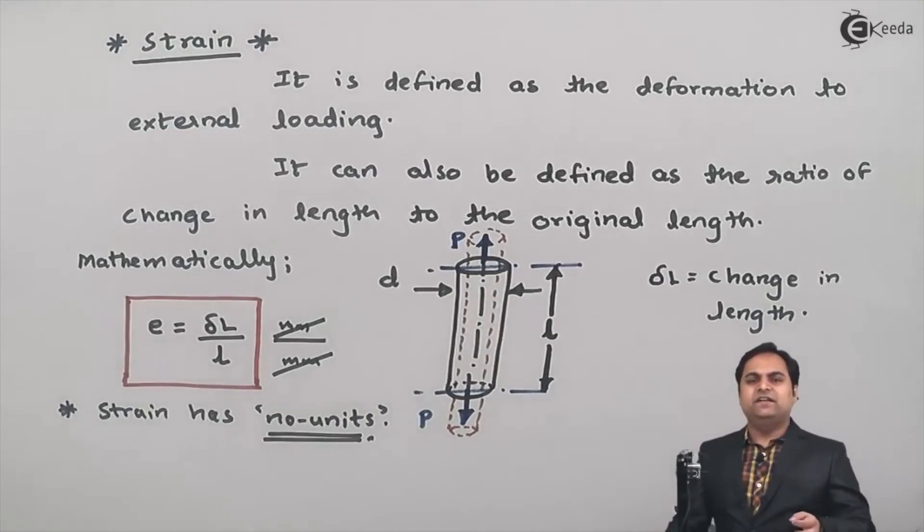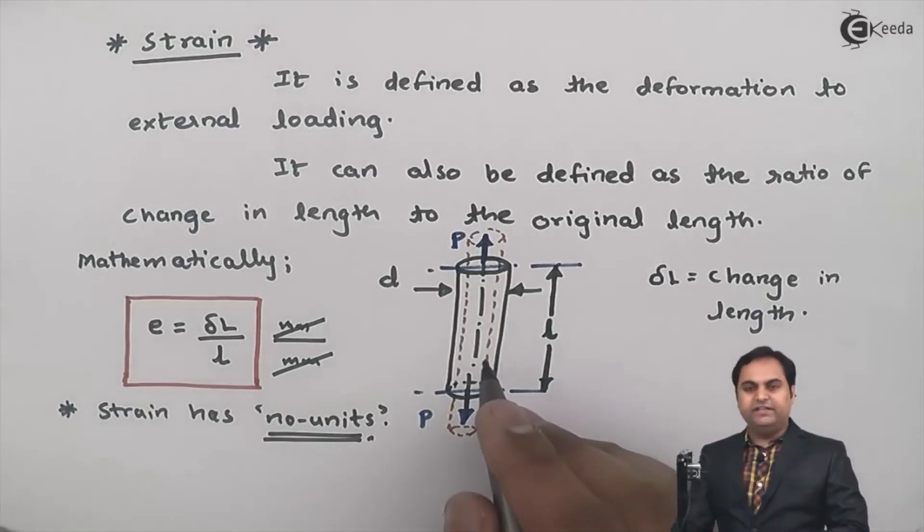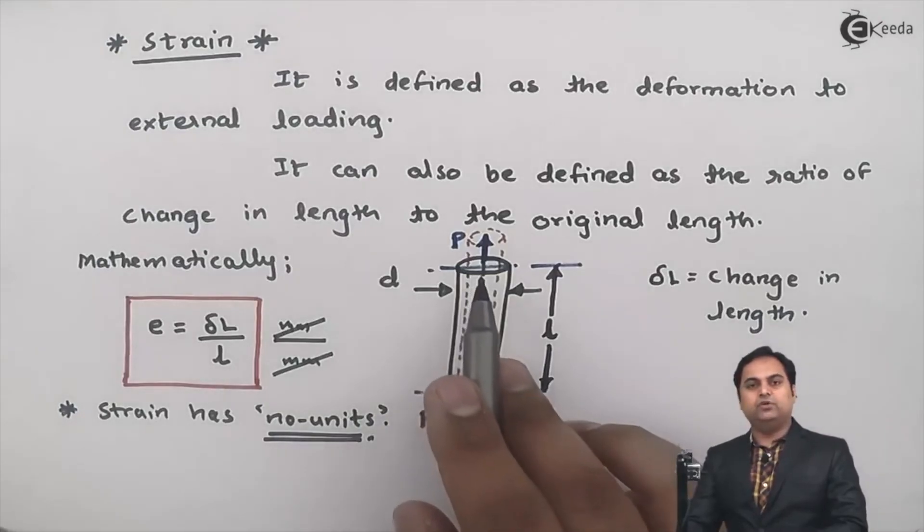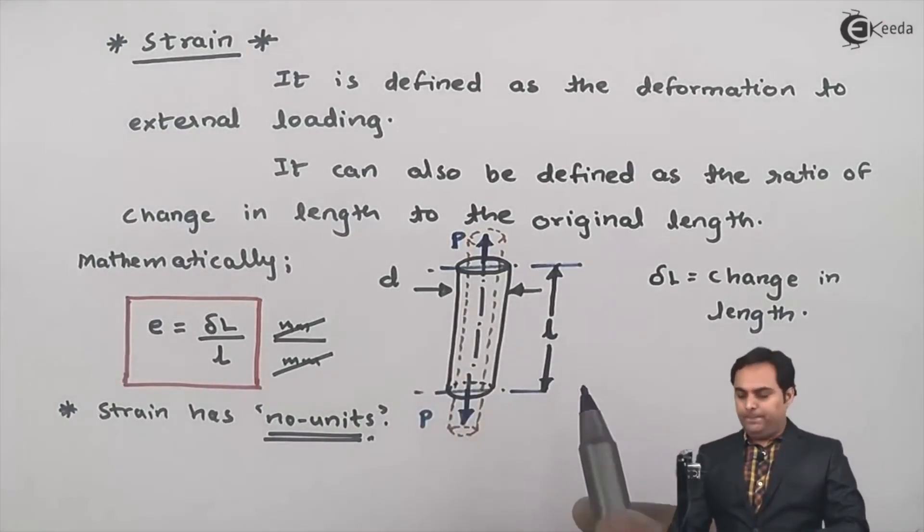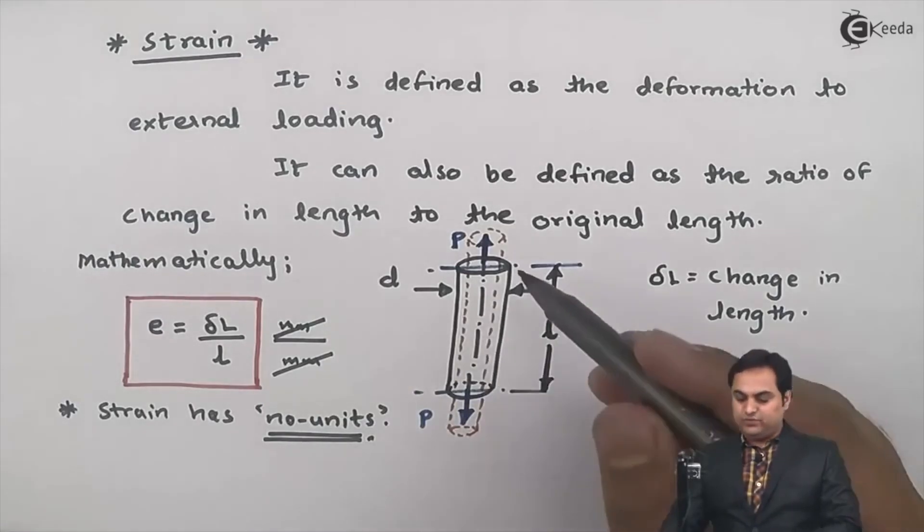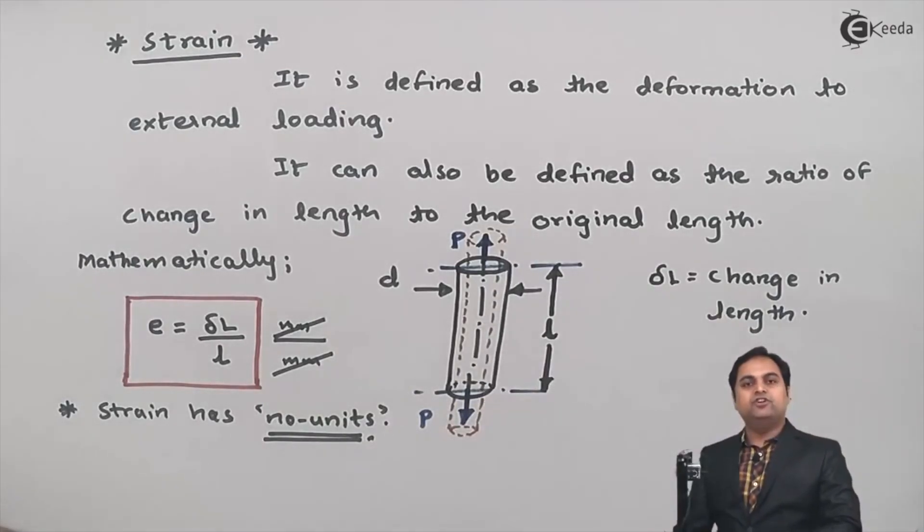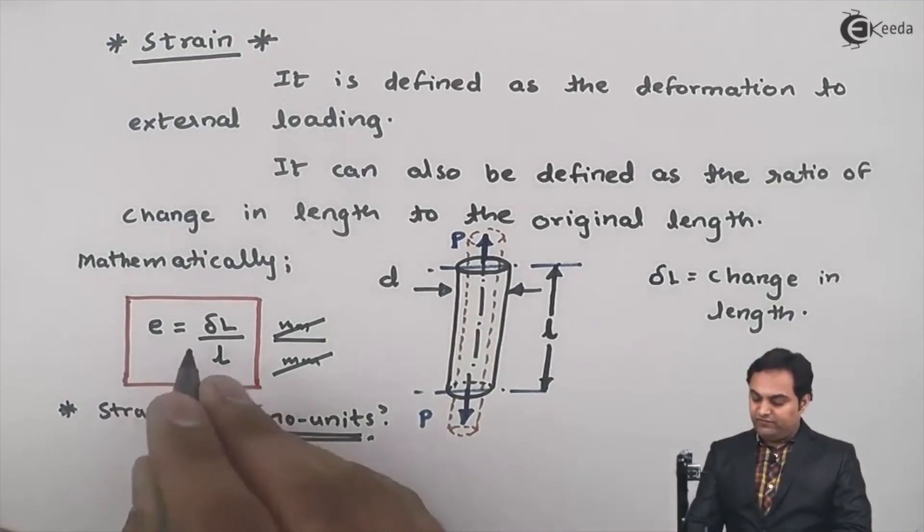Stress is the internal property of a material which resists external loading. Stress is that which we cannot see, but strain is that quantity which is visible in the form of change of shape.